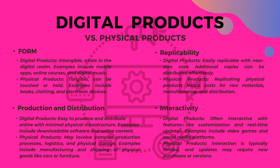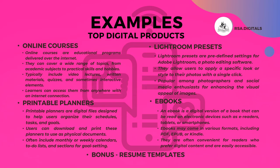In terms of replicability, digital products are easily replicable with near-zero cost — additional copies can be distributed effortlessly. Physical products incur costs for raw materials, manufacturing, and distribution when replicated. For interactivity, digital products are often interactive with features like customization and real-time updates — examples include video games and social media platforms. Physical products have interaction that is typically limited, and updates may require new purchases or versions.